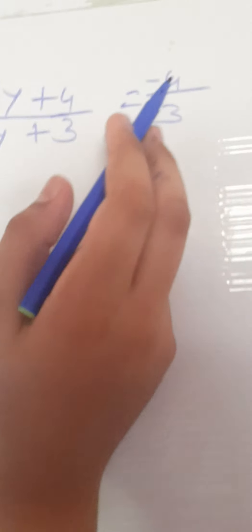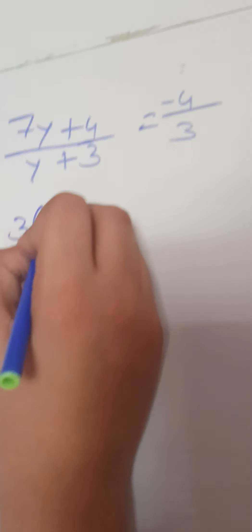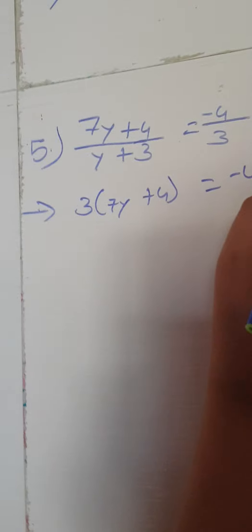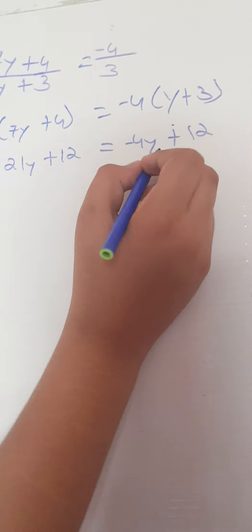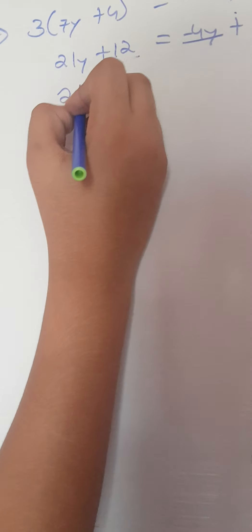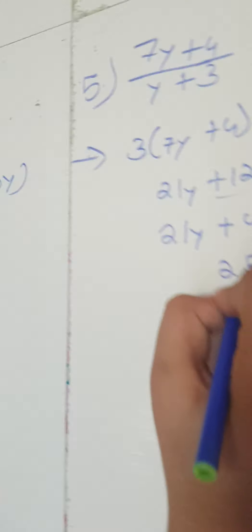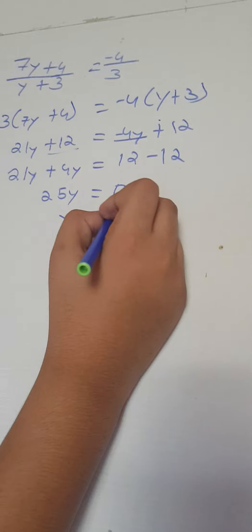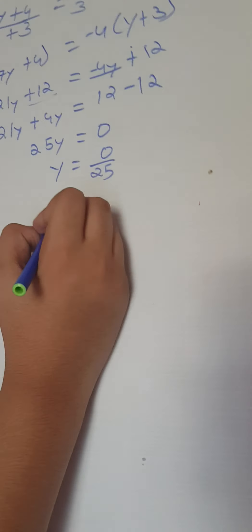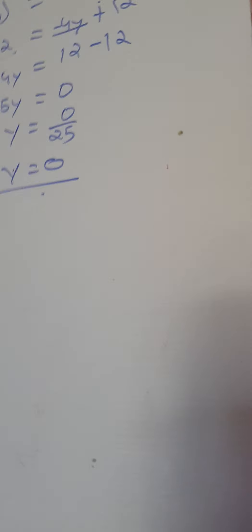Now let us do our fifth question. We need to do cross multiplication. So 3 is multiplied by 7y plus 4, which is equal to minus 4 multiplied by y plus 3. Here we will get 21y plus 12 which is equal to minus 4y plus 12. Now we will transpose: 21y plus 4y equals to 12 minus 12. When we add them we will get 25y. Plus minus minus gives 0. So y is equal to 0 upon 25. We will get y's value as 0. Any number divided by 0 is 0.